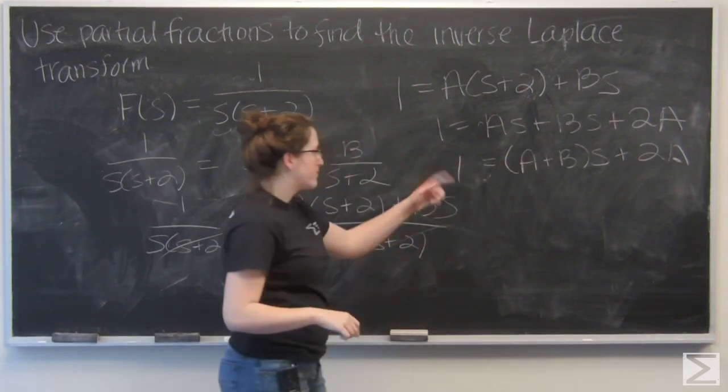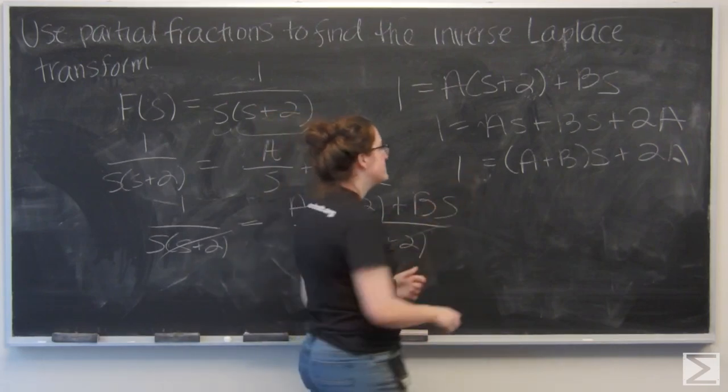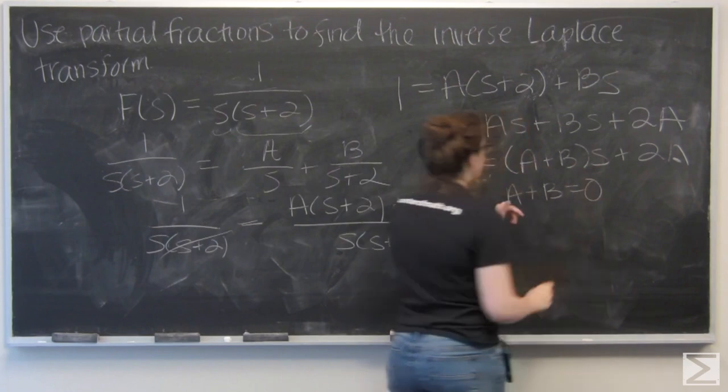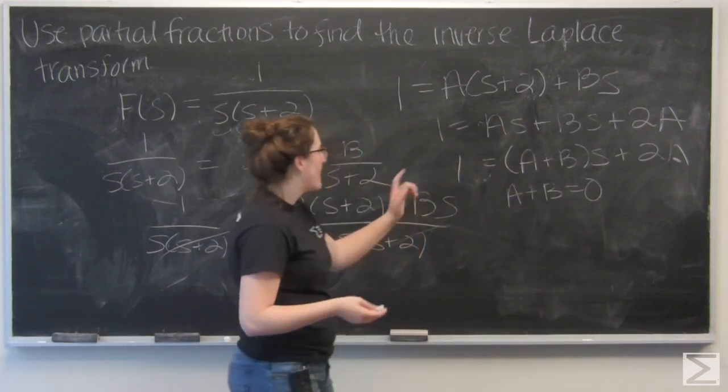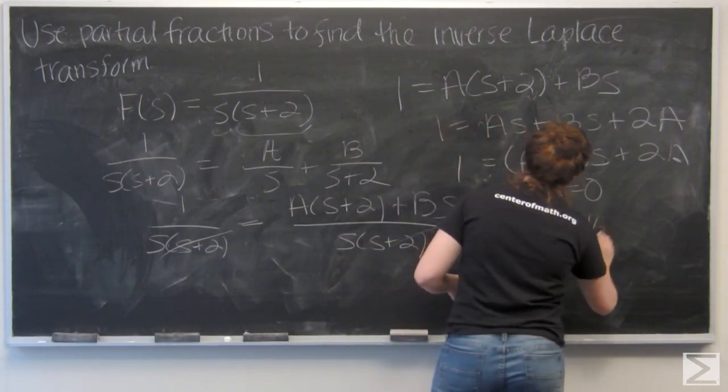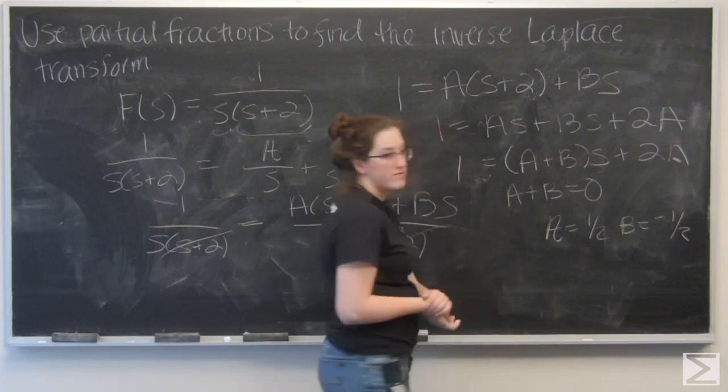Now I can match up with the other side. Well, on the left side of the equation, I don't actually have a term with s. So I know a plus b has to equal 0, and 2a has to equal 1. That makes a 1 half and b negative 1 half.